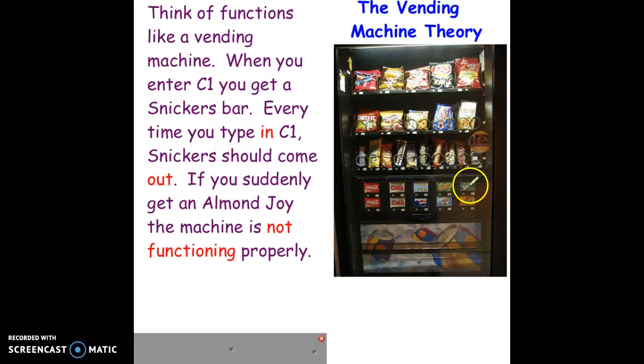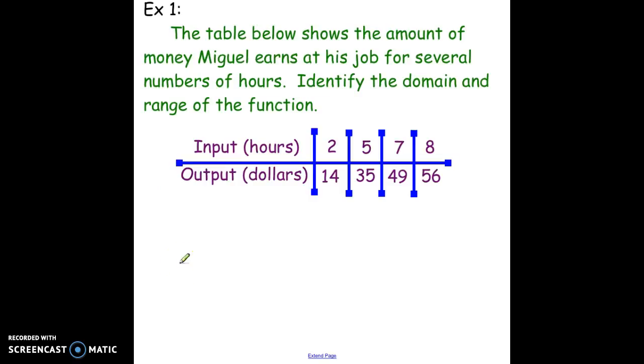Example 1: We've got Miguel who's earning money at a job for working several different hours. We're going to identify the domain and the range for this function. The input is his hours, the output is the dollars. The domain is what we put in: 2, 5, 7, and 8. The range are the things that come out - the money that he's making: 14, 35, 49, and 56. That's all we have to do to identify the domain and range from this table.